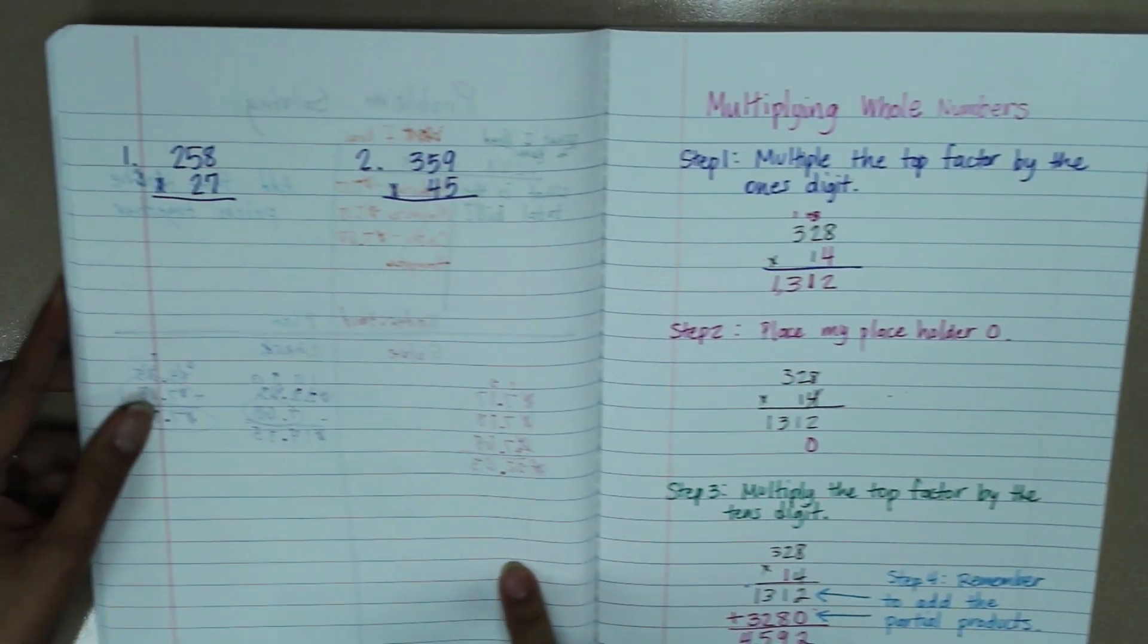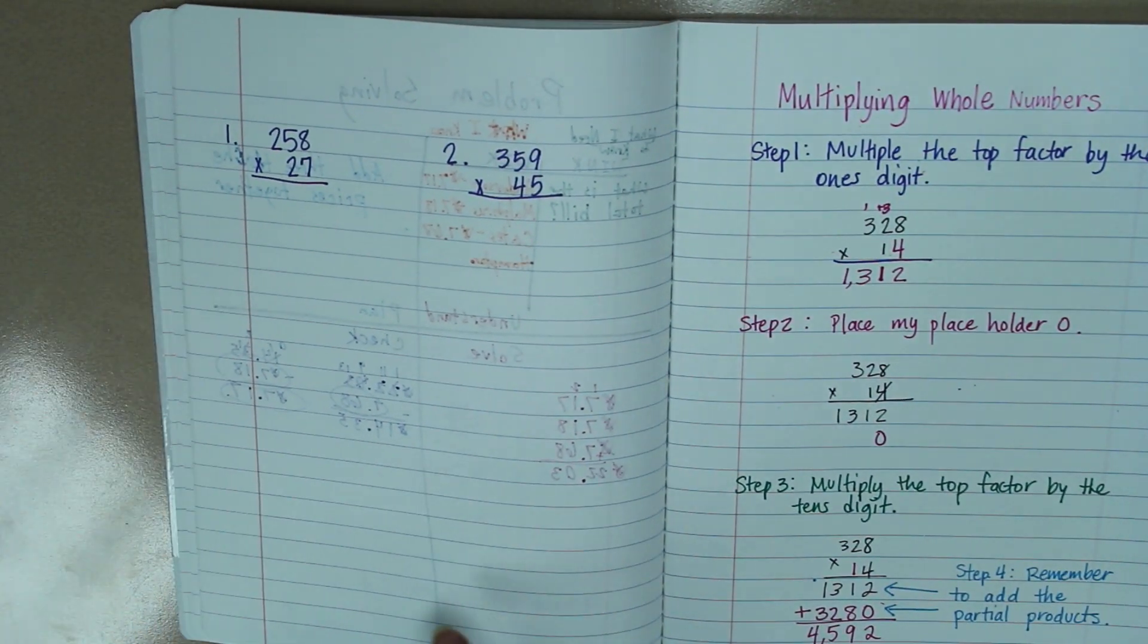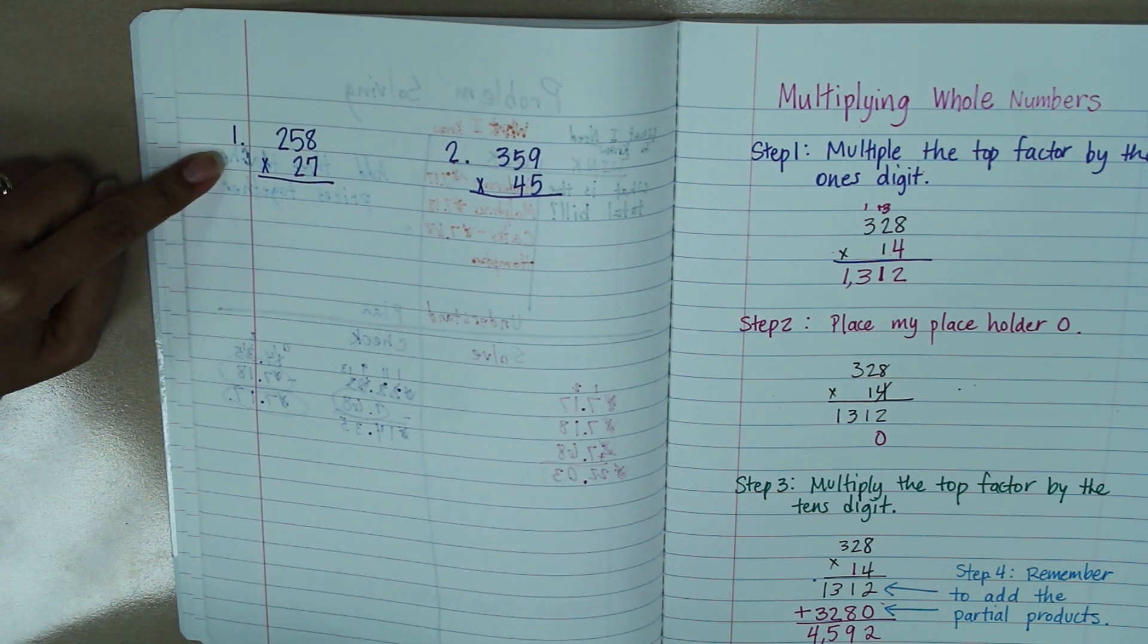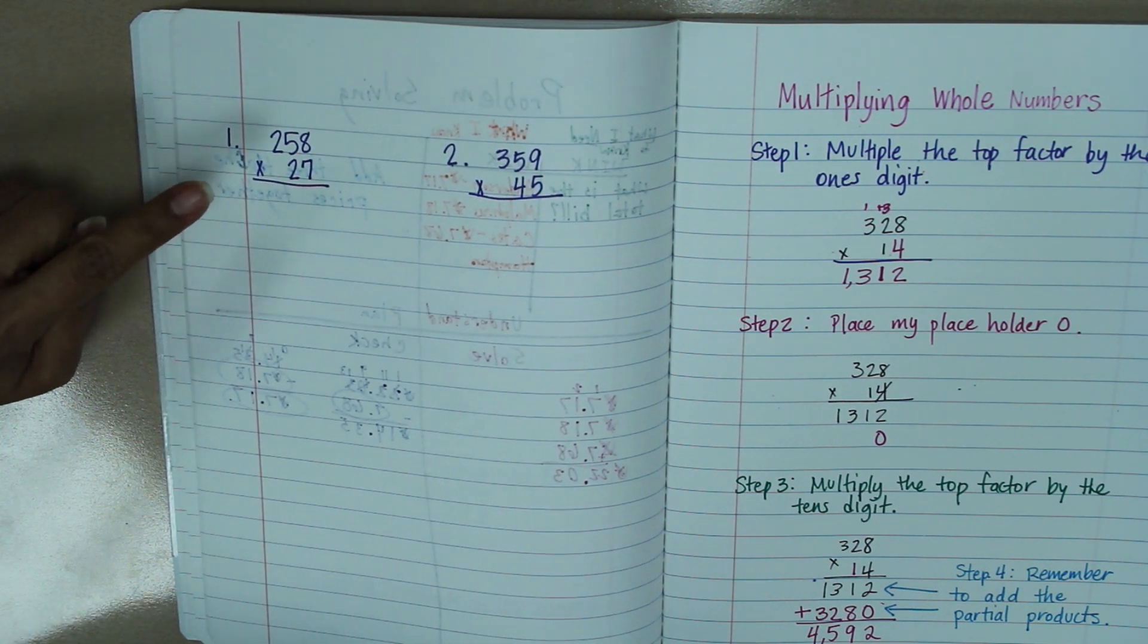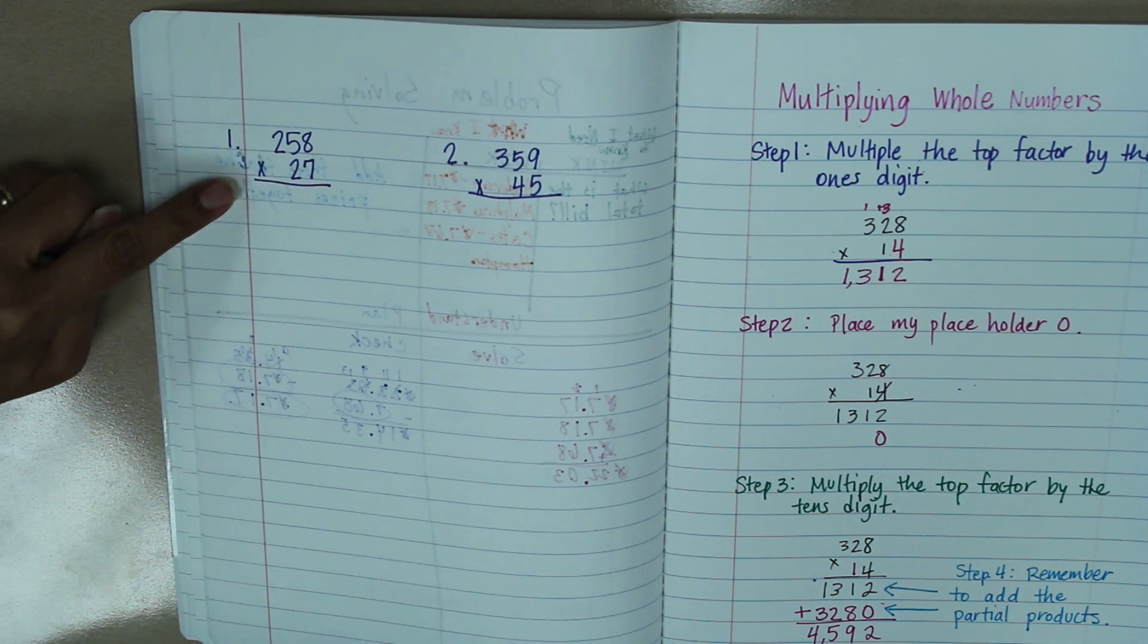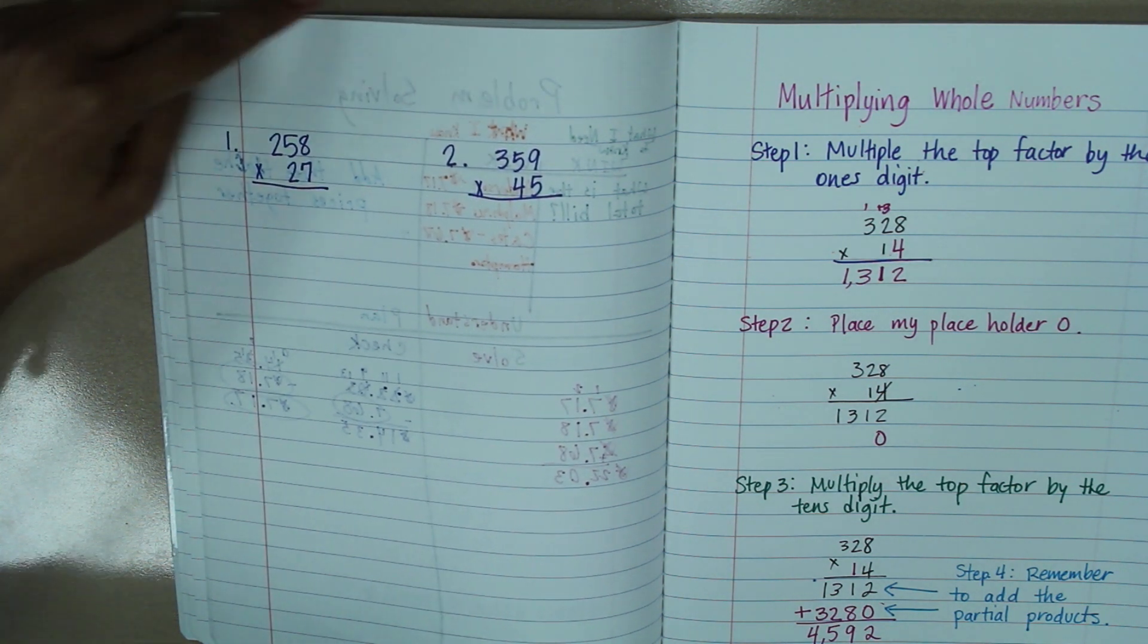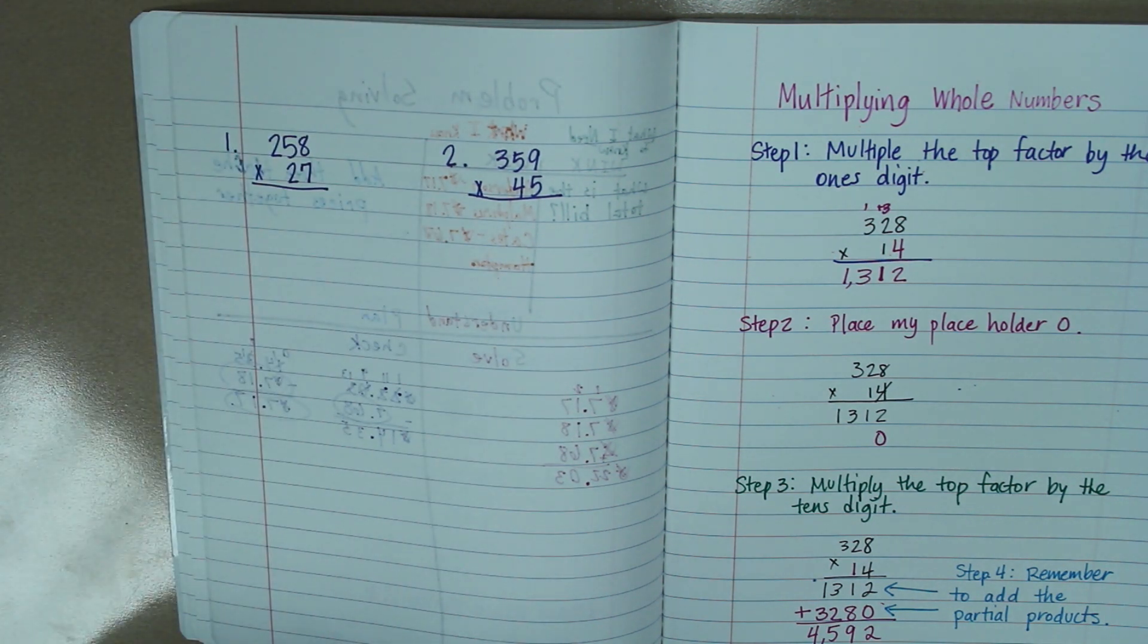And now for the left side. Let's work out problem number 1, 258 times 27. I know you can do it. Just remember to follow the steps that we just finished reviewing, and then go on to number 2 and work on that one independently as well. Good luck!